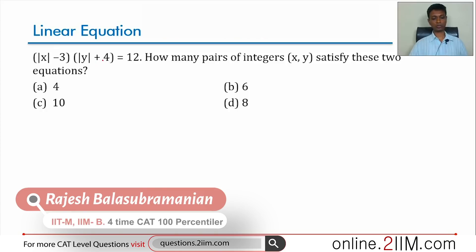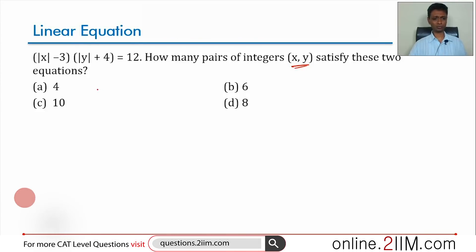|x - 3| × |y + 4| = 12. How many pairs of integers (x, y) satisfy this equation? Product equal to 12. Very simple thing: keep in mind when x and y are integers...